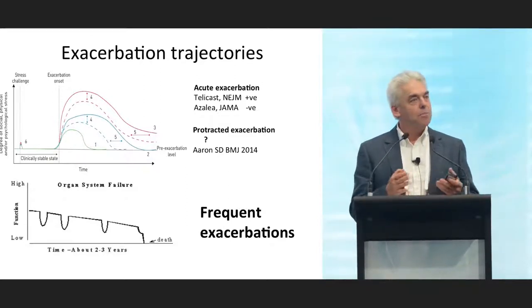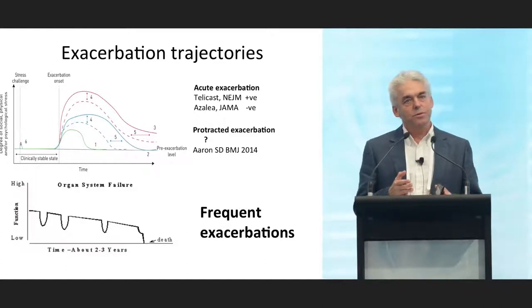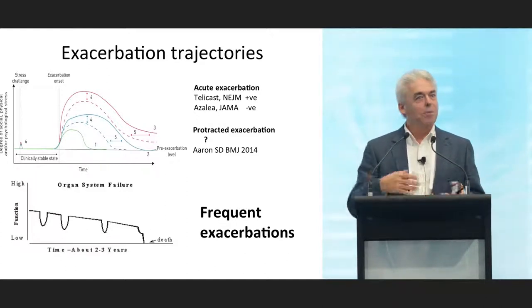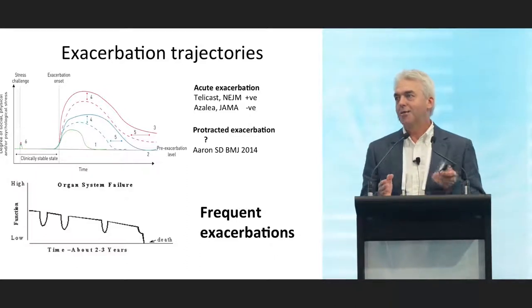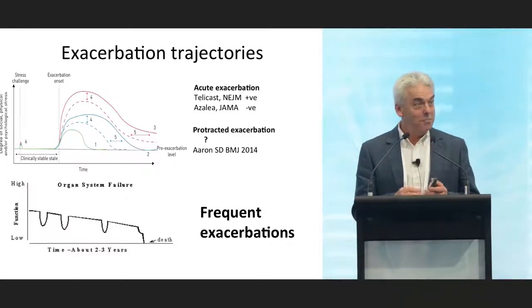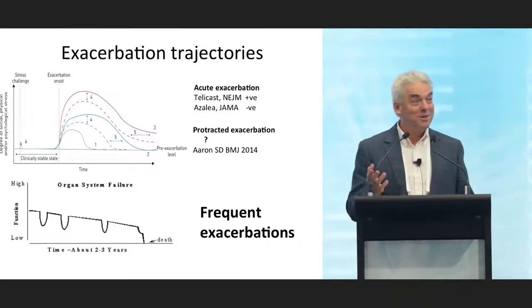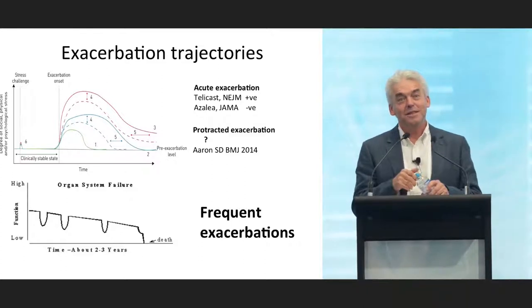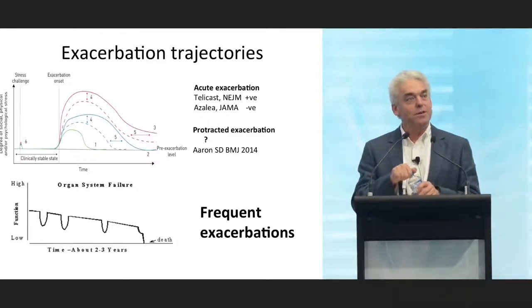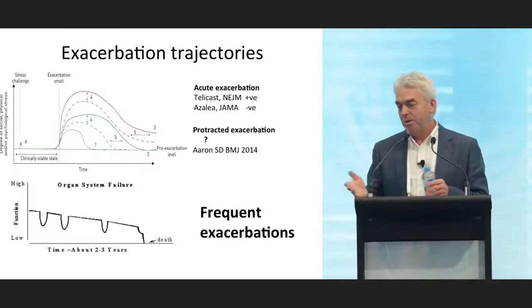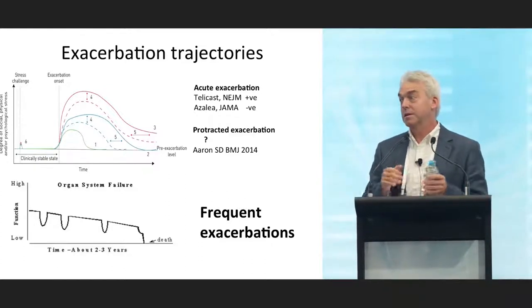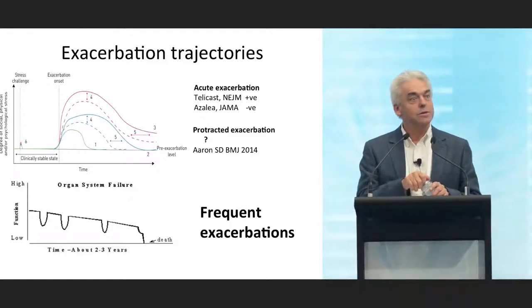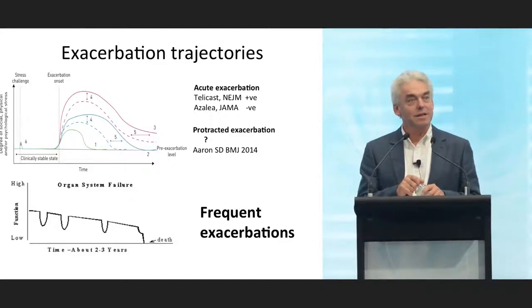Protracted exacerbations are another beast — someone getting an exacerbation but not being the same for weeks and months afterwards. Many of us saw these patients after last year's flu epidemic. I actually found macrolides useful, though therapeutically this is an evidence-free zone. There's a lovely paper by Sean Aron studying this phenomenon in the East London cohort — studying protracted COPD exacerbations. It's a fruitful area for research, though frequency is dependent somewhat on having epidemic exacerbation years.